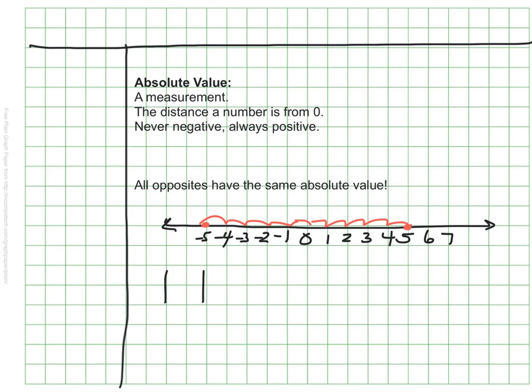So what that would look like would be, let's say, the absolute value of negative nine. Well, that's nine spaces away from zero, so that would be nine.